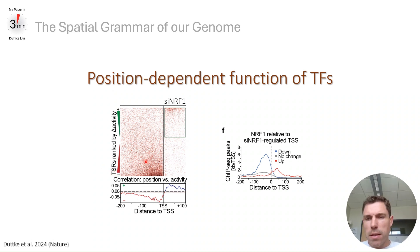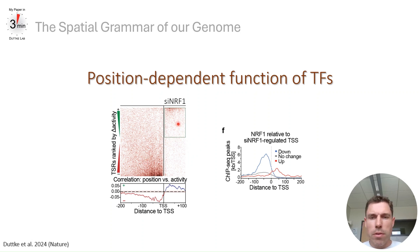Therefore, the upstream NF1 motif is associated with activation, while the NF1 motif downstream was associated with repression. This was also confirmed in ChIP-seq data.